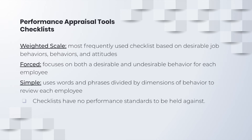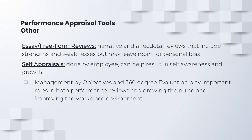Another performance appraisal tool commonly used is checklists. A weighted scale checklist is used most frequently and looks for desirable job behaviors and attitudes. A forced checklist focuses on both desirable and undesirable behavior for each employee, and a simple checklist uses words and phrases within different dimensions of behavior to describe and review each employee. The biggest problem with checklists is that there is no performance standard to be held against. There are also essay or free-form reviews, which are narrative and anecdotal, include strengths and weaknesses, but may leave room for personal bias. Self-appraisals are done by the employee themselves and can help result in self-awareness and growth. Management by objectives and 360-degree evaluation play important roles in both performance reviews and growing the nurse and improving the workplace environment.